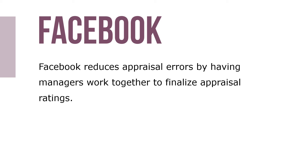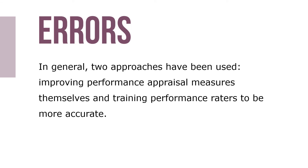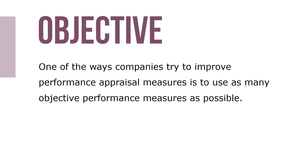One reason managers make these errors is that they often don't spend enough time gathering or reviewing performance data. Facebook reduces appraisal errors by having managers work together to finalize performance ratings. In general, two approaches have been used to minimize rating errors and improve accuracy: improving performance appraisal measures themselves, and training performance raters to be more accurate. One way companies try to improve measures is to use objective performance measures — those easily and directly counted or quantified — such as output, scrap, waste, sales, customer complaints, and rejection rates.